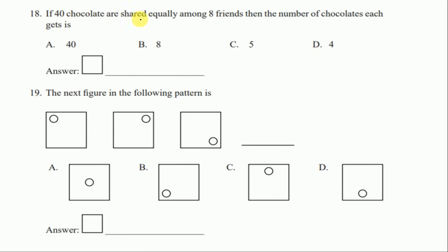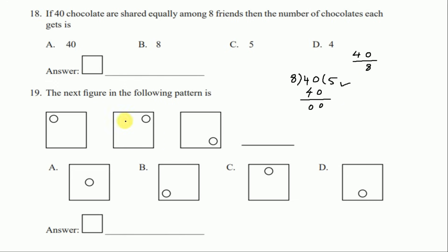Question number eighteen: if 40 chocolates are shared equally among 8 friends, then the number of chocolates each gets. We divide 40 by 8 — eight fives are forty, so each friend gets 5 chocolates. The right answer is option C, 5.